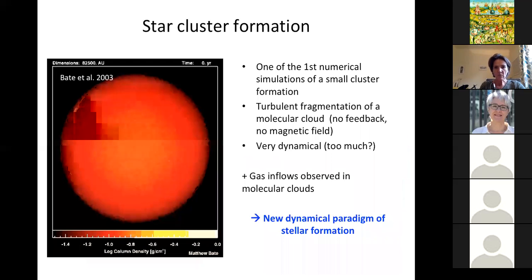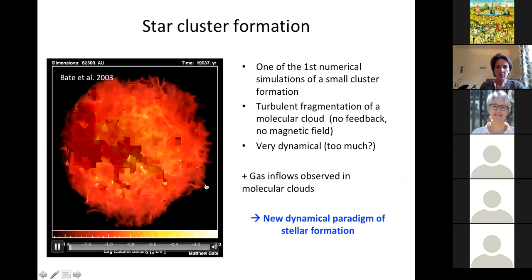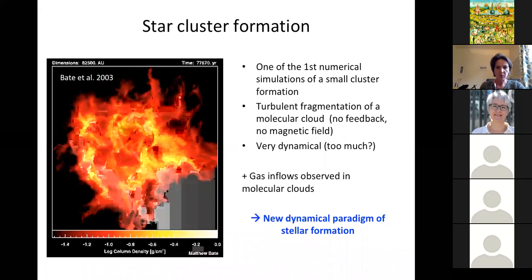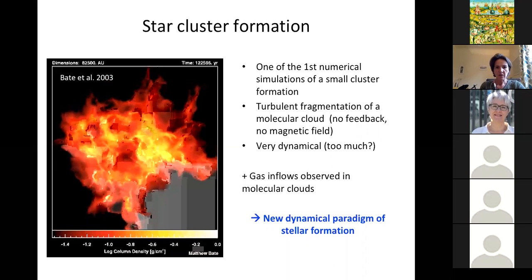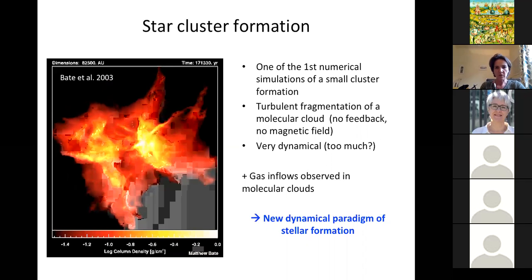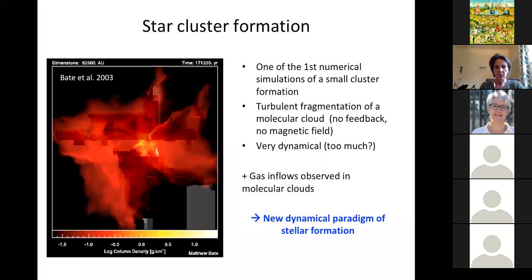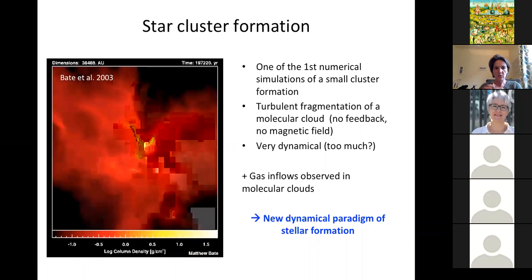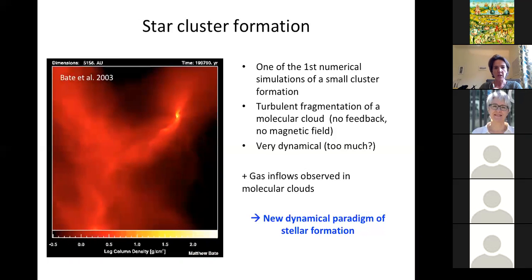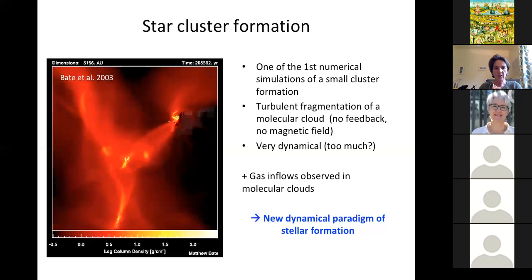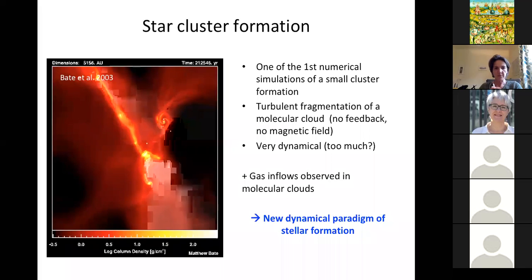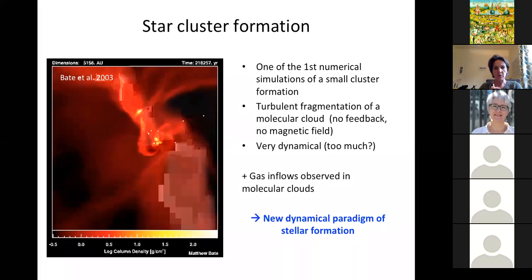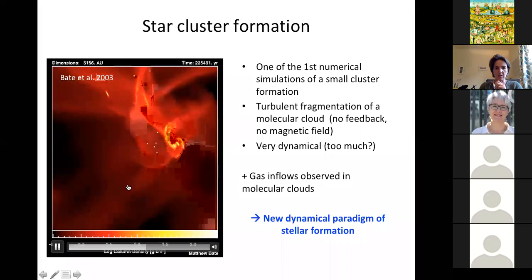There are still many questions about exactly how clusters form and evolve. I'll show one of the first numerical simulations performed by Matthew Bate in 2003. You start with a large molecular cloud with turbulent motion, no feedback and no magnetic field. What was striking from this simulation is that distributed fragmentation was able to form filaments, which has also been revealed by Herschel. It looks very dynamical — probably too much — but since then, with magnetic fields and feedback included, it is a little bit less dynamic.